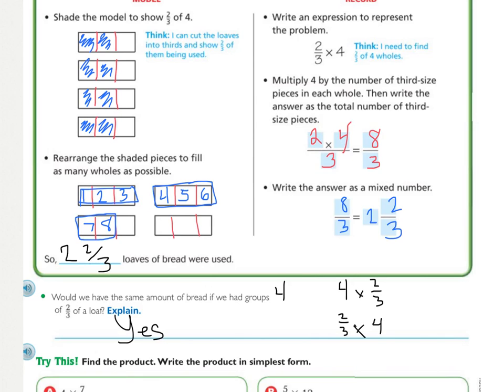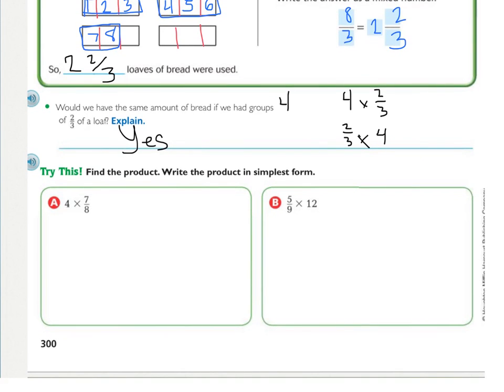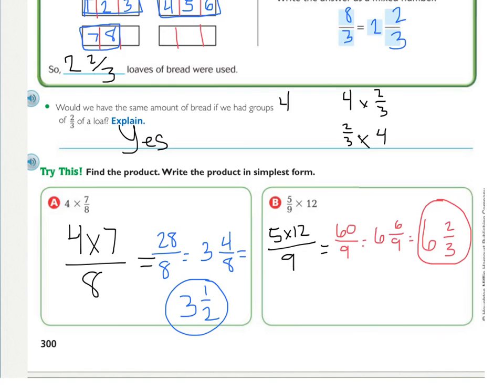So looking at the try this. Find the product and write the product in the simplest form. So yes, you do have to reduce. So looking at A, 4 times 7/8. And B, 5/9 times 12. Let's set this one up. We can go 4 times 7 over 8 equals what? And then B, I'm going to have you set up on your own. Solve both A and B. Your final answer should have been 3 1/2 and 6 2/3.